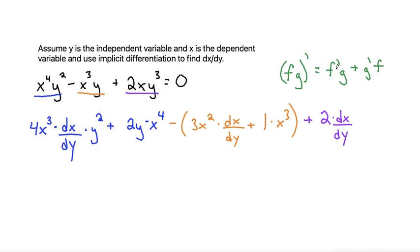That would be the F prime, so we multiply that by G, which is Y cubed, plus G prime, which would be 3Y squared, times F, which is 2X. Running out of space, and then just bring down the equal 0.